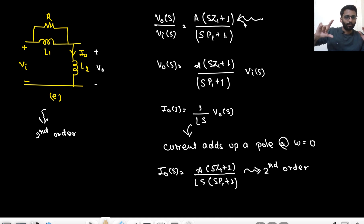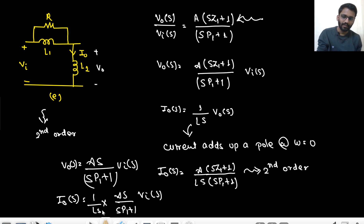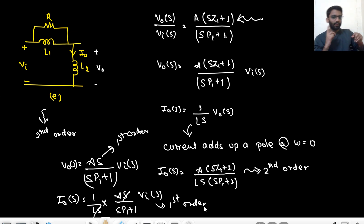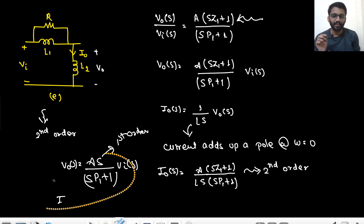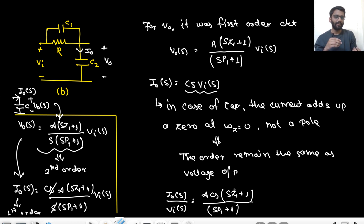In case of voltage output, you should not have a zero at ω = 0 for the inductor current analysis to give a higher order. For example, if the voltage transfer function is A·s / (s/p1 + 1), and current is (1/(L·s)) × that, then the s in numerator and denominator cancel, giving a first-order current — same as voltage. So you always need to check the location of zeros and poles at ω = 0.